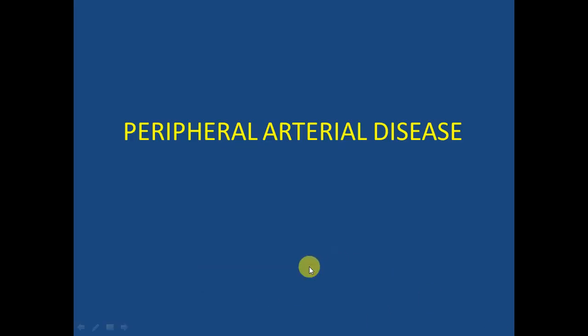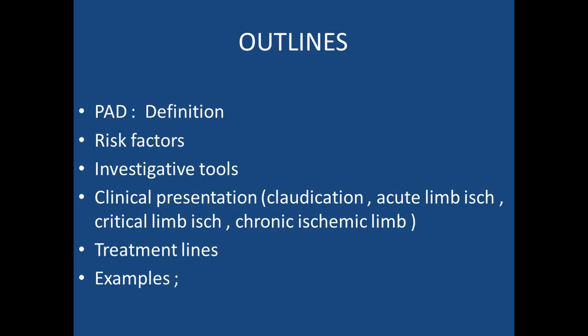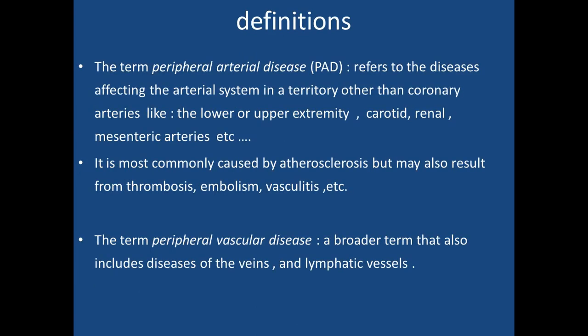The next topic of this lecture will be about peripheral arterial disease. The term peripheral arterial disease affects the arterial system in a territory other than coronary arteries, like lower extremities, carotid, renal, and mesenteric arteries.